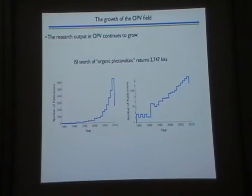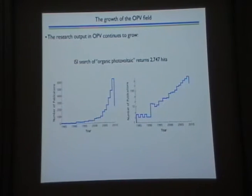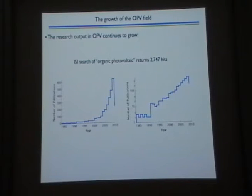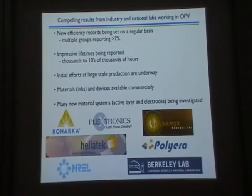Why OPV? There are a lot of reasons, and a lot of people recognize them. If you search the web of science database under the keyword 'organic photovoltaic,' you get about 3,000 hits, with exponential growth in publications over the last 25–35 years. The total number of researchers working on OPV globally is probably a few thousand — a pretty substantial effort. And there has been quite a bit of recent progress.